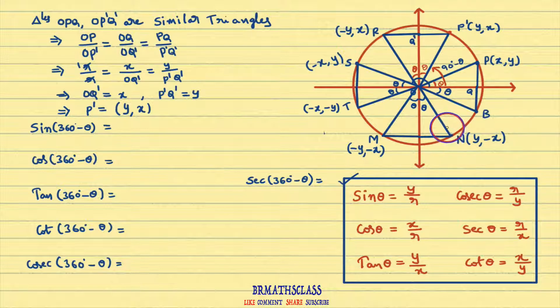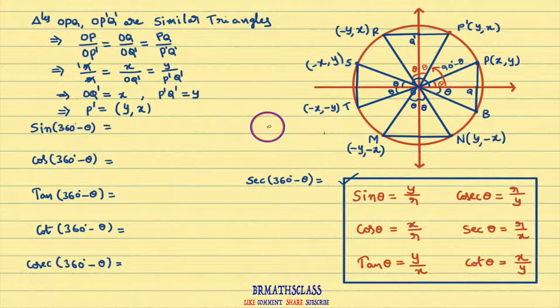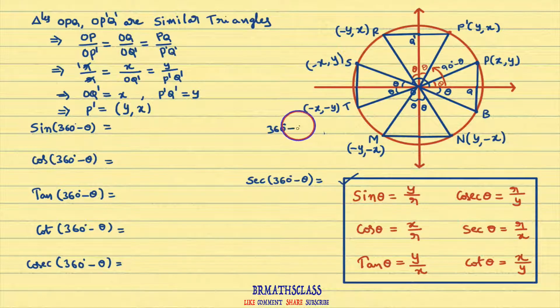Now in this class we will learn trigonometric ratios for allied angle 360 degrees minus theta.